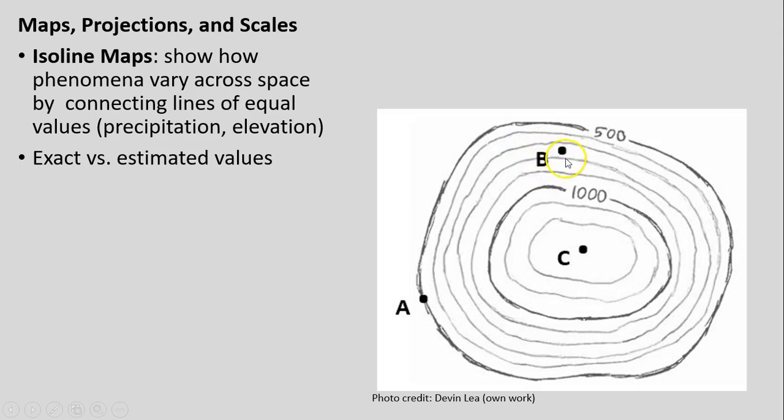For location B, which falls somewhere between the 700 and 800 lines, we don't know its exact value — we only know it would be somewhere between 701 and 799. It could sometimes be approximated as the middle of that range, so approximately 750 units, but it could be any value from 701 to 799.